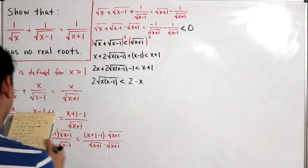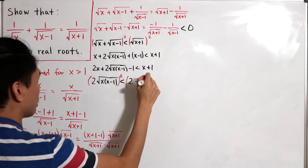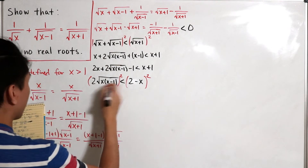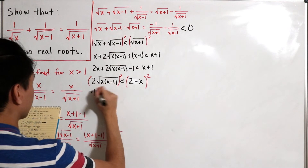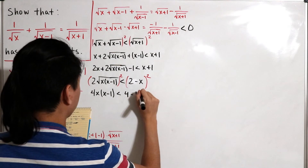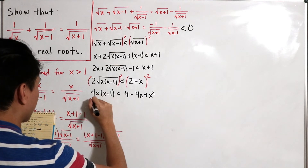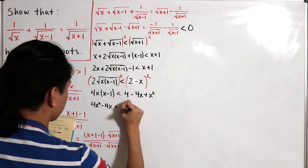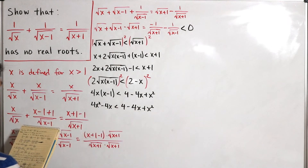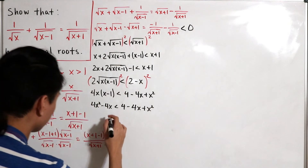We're left with 2 times the square root of x(x minus 1) less than 2 minus x. We square both sides a second time. The left side gives 4x(x minus 1), and applying the FOIL method on the right gives 4 minus 4x plus x squared. Distributing and simplifying, we have 4x squared minus 4x on the left, still less than 4 minus 4x plus x squared. Combining terms by subtracting common values from both sides.